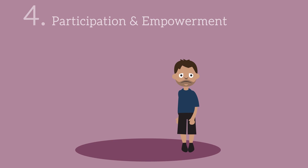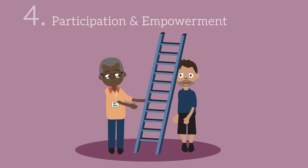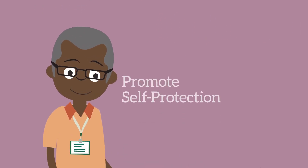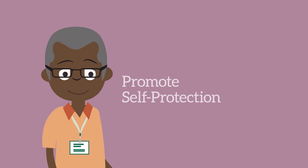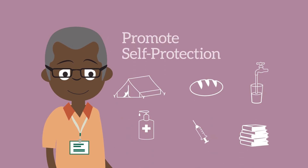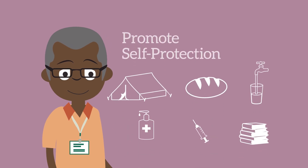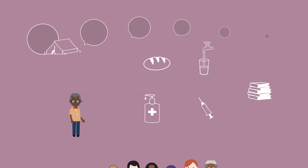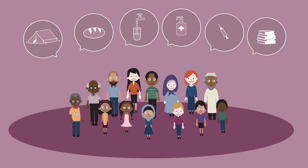Four: participation and empowerment. The key isn't what we can do for people — the key is how we can support them to take back their own lives. Promote self-protection and assist people in claiming their rights: the right to shelter, food, water, sanitation, health, and education. Everyone deserves these things. Embolden them to believe that.